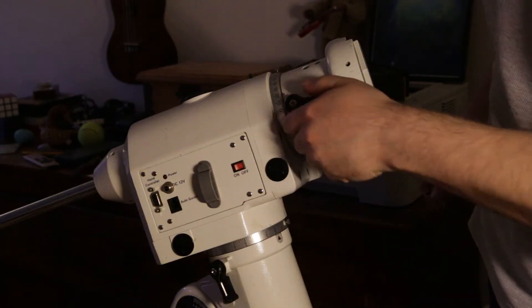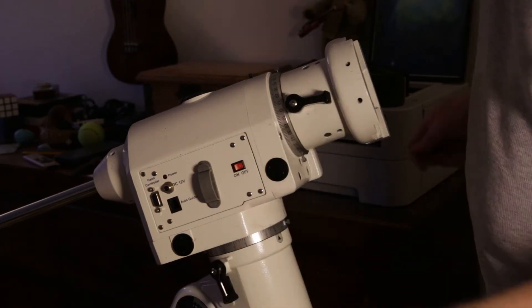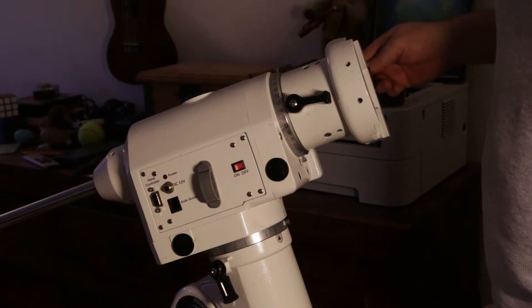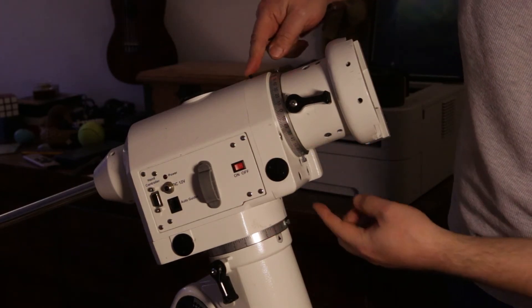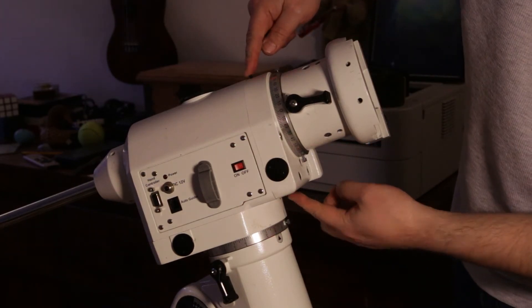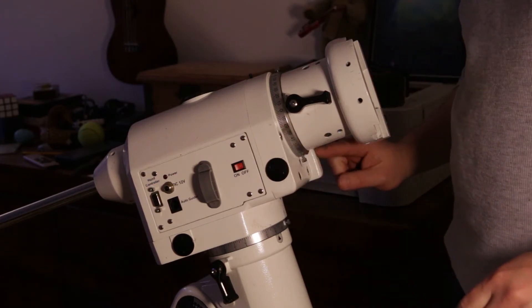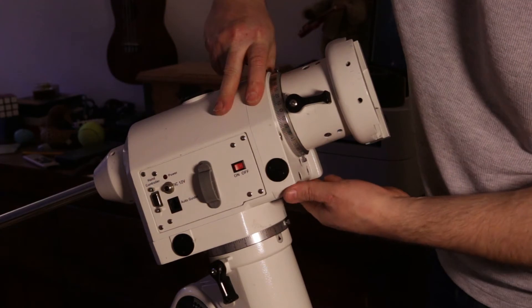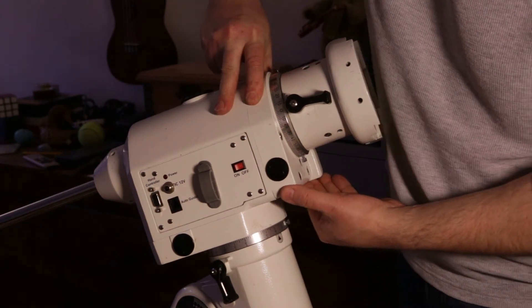First thing to do is to make sure that your clutches are locked. I'm going to do the declination axis first. You start by loosening these grub screws and make sure all your four M6 bolts are loose enough so you can actually feel the play here.